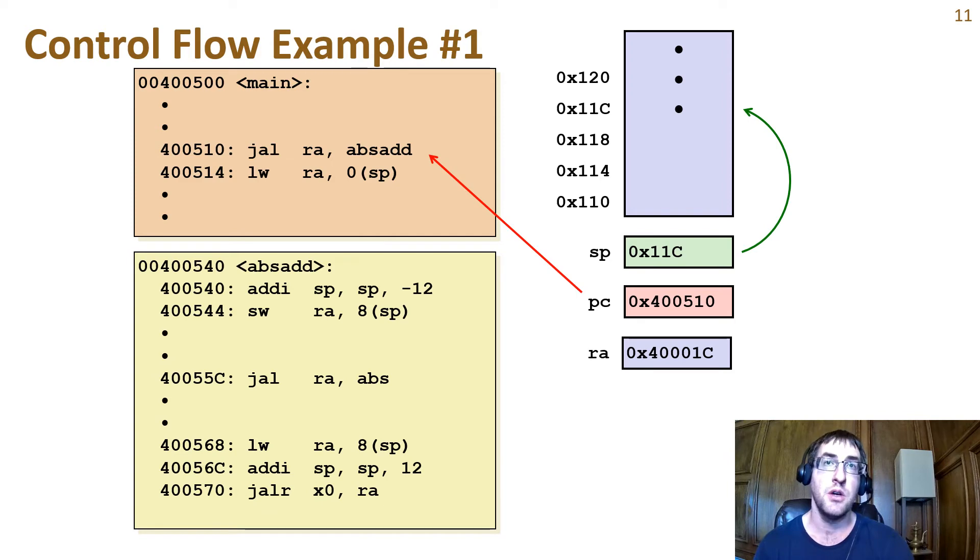Let's have a look through the disassembled code of our two non-leaf procedures. Here we can see that the instruction pointer points to the address of the jump and link absadd instruction. At this point in time, the stack pointer is at value 11c in hexadecimal, and the return address register is at hexadecimal 400001c for the return value to return from main.